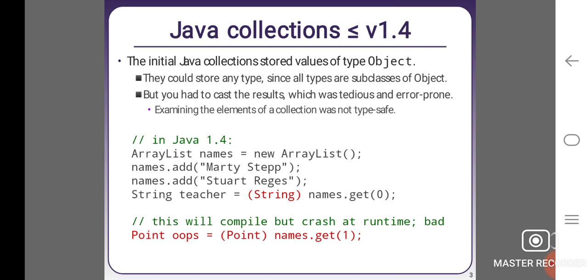In Java version 1.4: ArrayList names = new ArrayList. names.add("Marty Stepp"); names.add("Stuart Reges"). String teacher = (String) names.get(0). This will compile but crash at runtime - bad. Point oops = (Point) names.get(1).